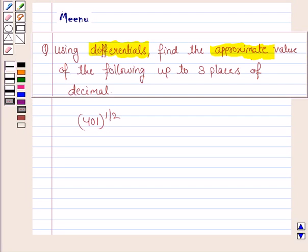Hello and welcome to the session. Let's work out the following problem. It says using differentials, find the approximate value of the following up to 3 places of decimal.